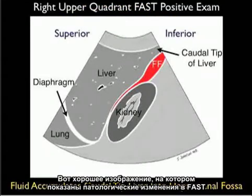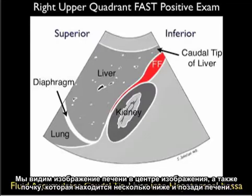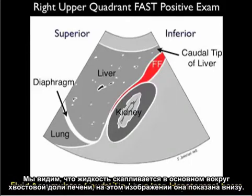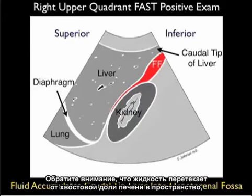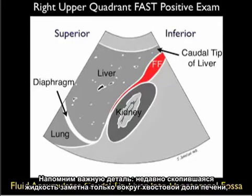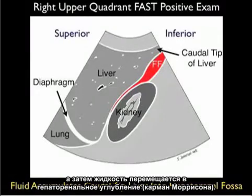Here's a nice illustration showing a positive examination from the right upper quadrant view of the trauma FAST exam. We see the liver in the middle of the image and the kidney slightly posterior and inferior to the liver. The preferential deposition of fluid, shown in orange, layers out predominantly around the caudal tip of the liver toward the inferior edge of the image, then flows from the caudal tip into Morrison's pouch between the liver and the kidney. Fresh fluid can often only be seen around that caudal tip before moving into the hepatorenal interface.